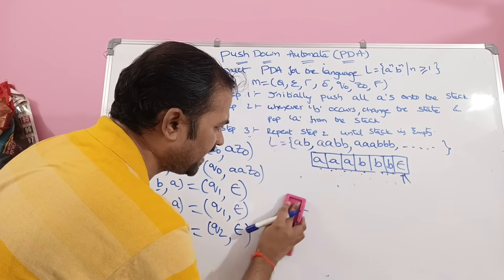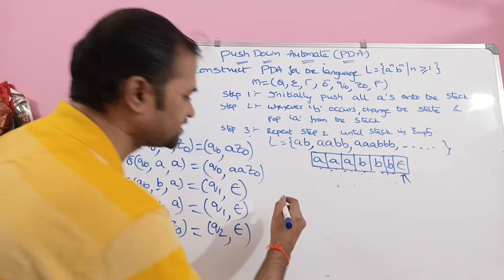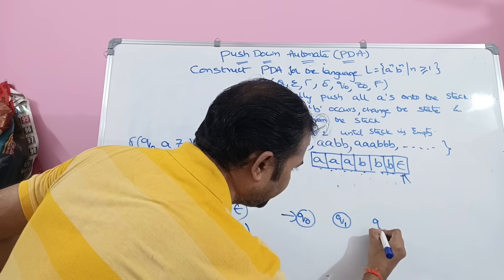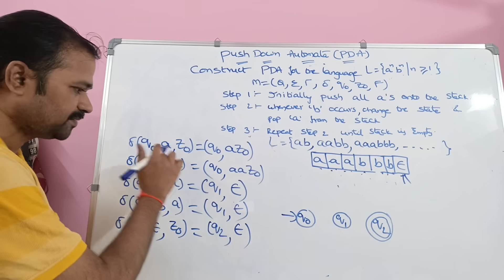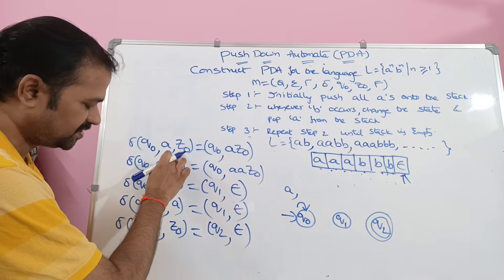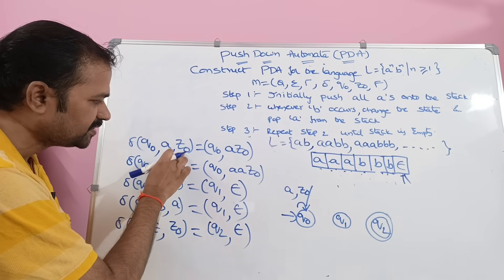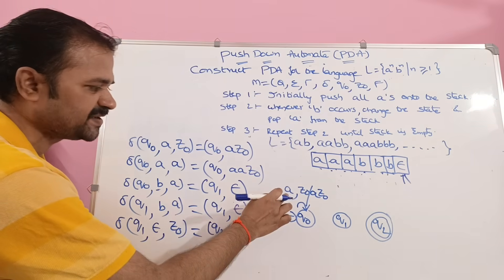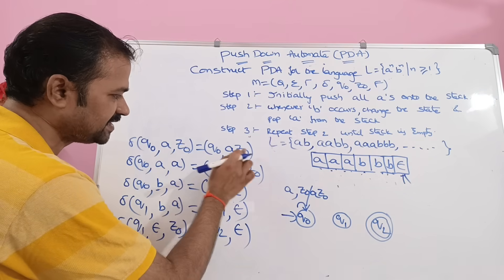Now let us draw the transition diagram. Totally we have three states: q0, q1, and q2, where q2 is the final state. On state q0, reading A with top of stack Z0, we go to q0 and replace Z0 with A Z0. This is a self-loop. Next, on q0 reading A with top of stack A, we go to q0 and replace A with A A — meaning we push A.